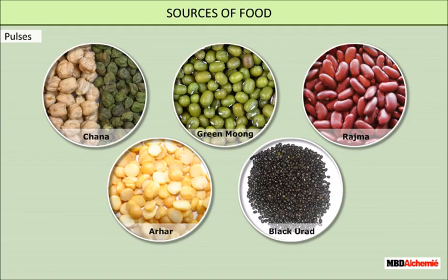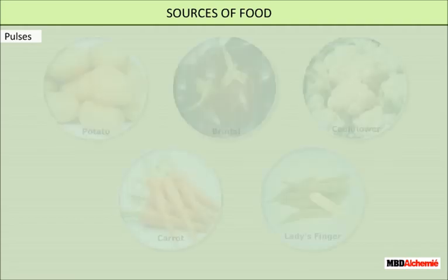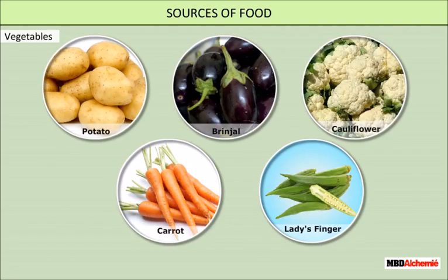We get a variety of pulses from plants. Pulses are very nutritious. Some common pulses that we eat are chana, green moong, rajma, arhar, and black urad.